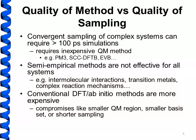In order to do QM/MM simulations of this length, traditionally people have used relatively inexpensive QM methods — for instance, semi-empirical methods or tight-binding methods like SCC-DFTB, or EVB methods. The disadvantage is that many of these semi-empirical methods have limitations in terms of what kinds of systems they can describe. If we're dealing with intermolecular interactions, transition metals, or complex reaction mechanisms, these methods will not necessarily be very effective unless re-parametrized for the specific system.